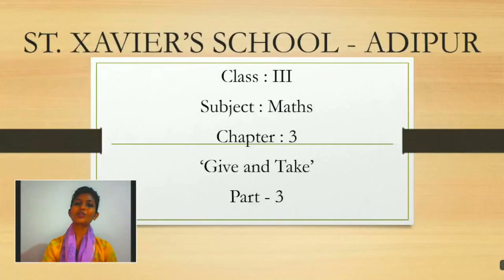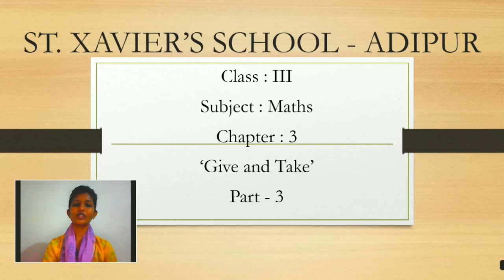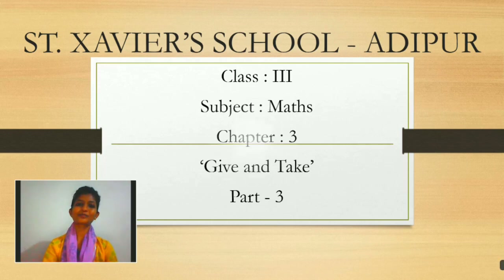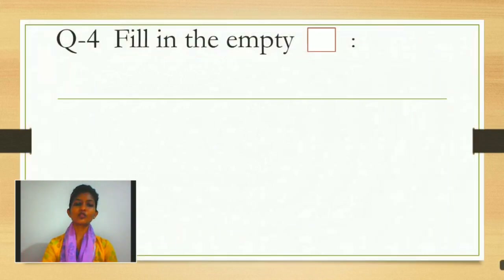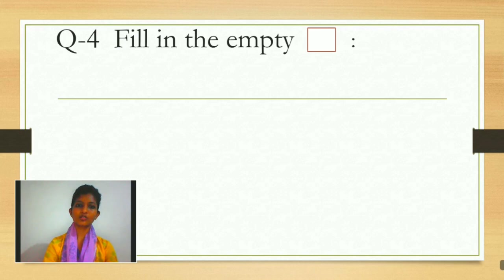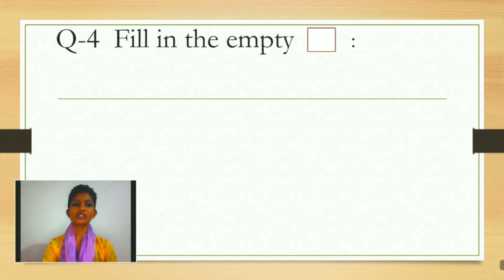Hello students. In your previous class we studied the problem sums of Chapter 3, Give and Take. Now we are going to start a new topic in this chapter, so pay attention. Question number 4, 'Fill in the empty box,' will be available in your practice book. Here we have to find out the number which is not given. So let's take example number 1.